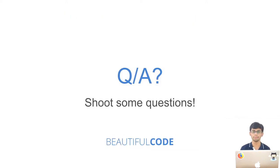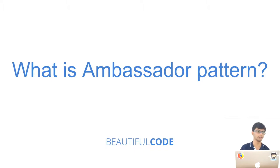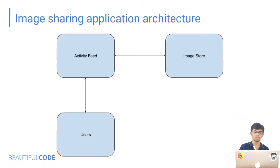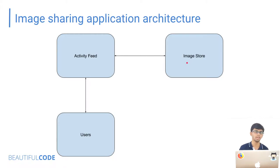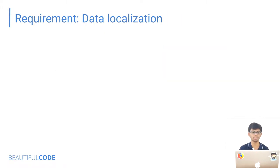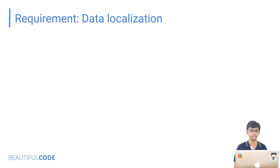Moving on to the next pattern: what is the ambassador pattern? Let's take a scenario of an image sharing application with three services: activity feed, image store, and users. When you log in, the activity feed service talks to the user service to get a list of users you're following, then uses that result to query the image store for images those users have posted. Now suppose the Indian government has passed a rule that all data uploaded by Indians must be stored only within India.